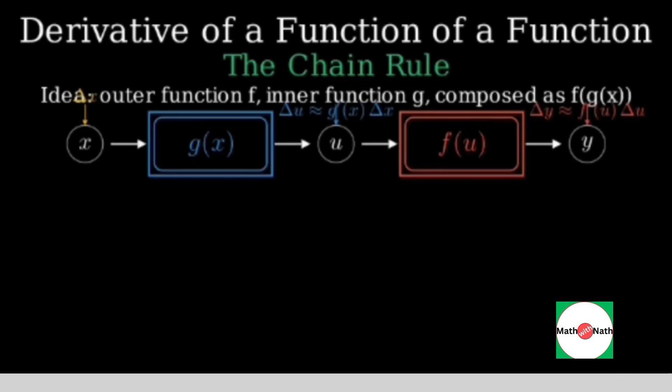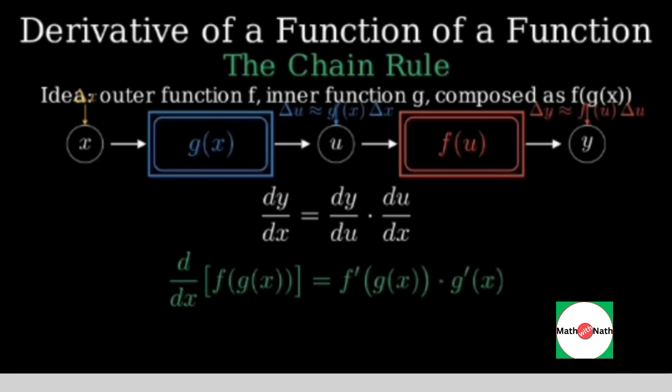Multiply the two rates. If we divide both sides by the tiny change in x and let the change go to zero, we get the chain rule. dy/dx equals dy/du times du/dx. In function notation, that's f prime of g of x times g prime of x.